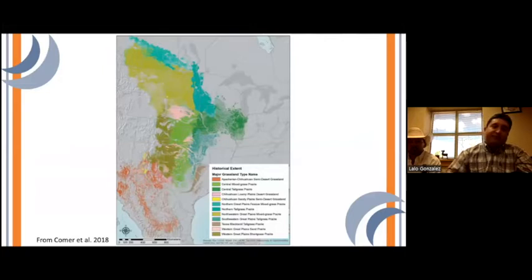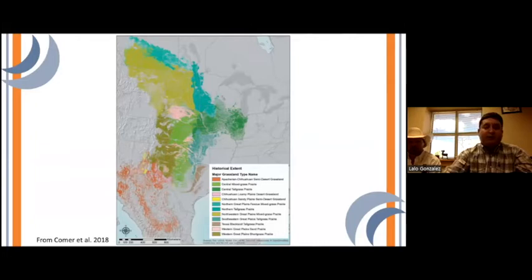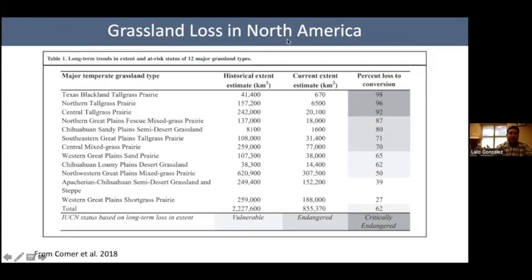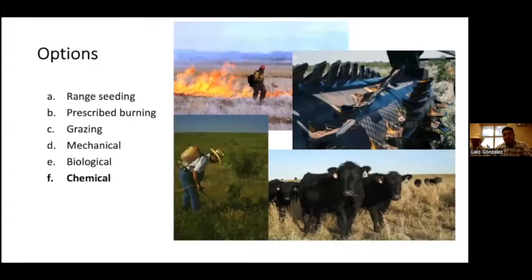This image shows where the grasslands are within North America — we in Texas are down in the red zone. One of the greatest concerns is that some grasslands have lost up to 98% of that land cover. We're losing grassland very rapidly — far faster than we are recovering from brush encroachment. The options we have include native plant seeding, prescribed burning, grazing through livestock, mechanical and biological methods, but today we're specifically talking about chemical applications.